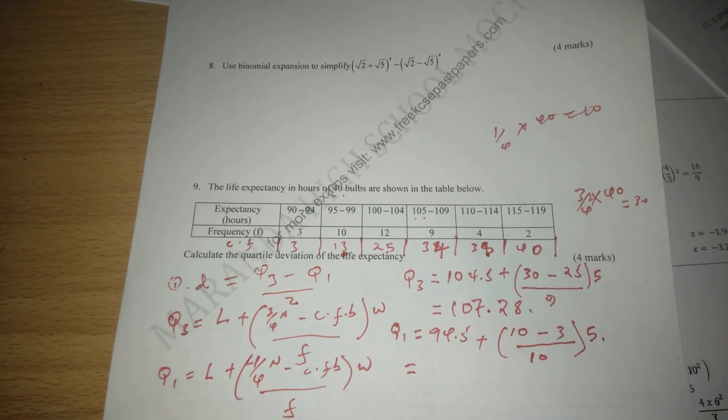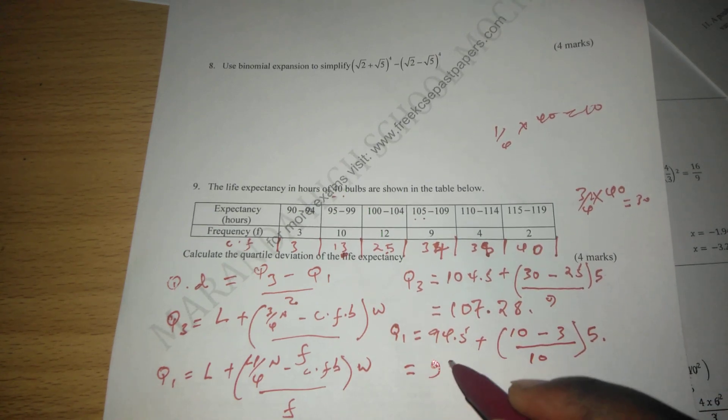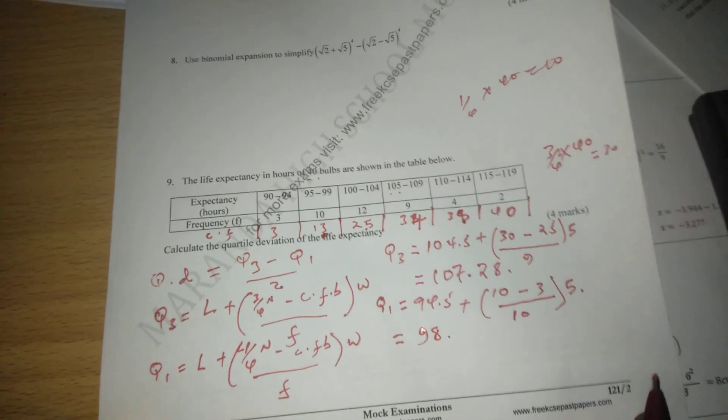So 10 minus 3 is 7. 7 divided by 10 is 0.7, multiplied by 5, gives us 3.5. Then when we add 94.5, we're going to get exactly 98. So 98 is Q1.